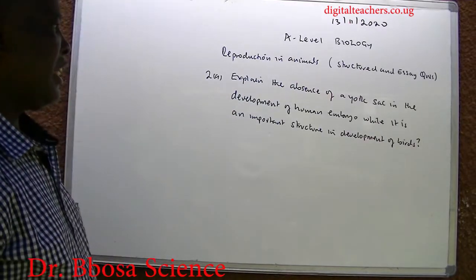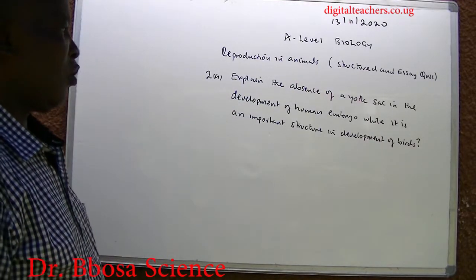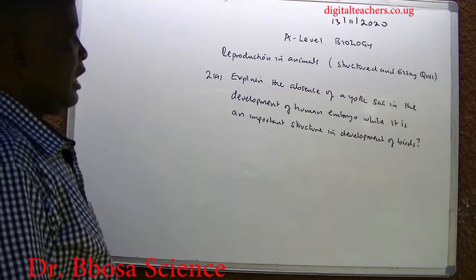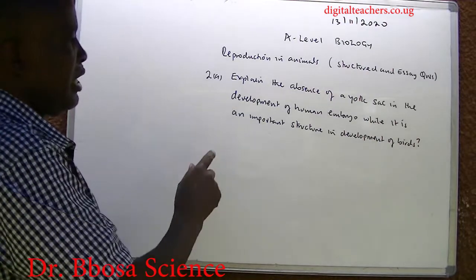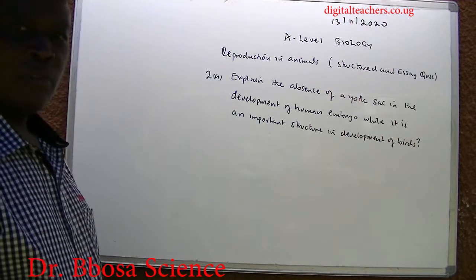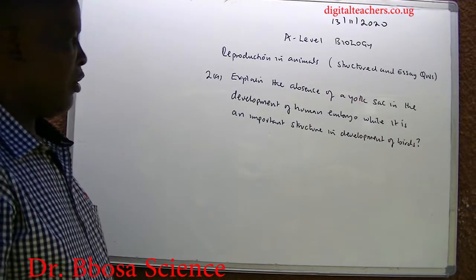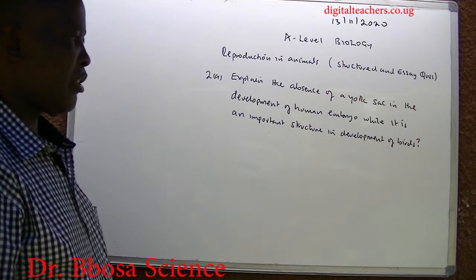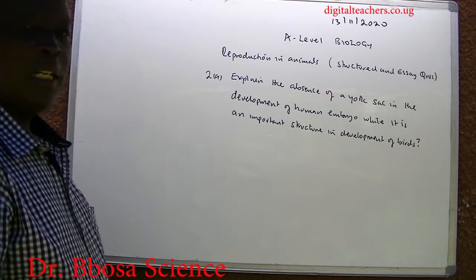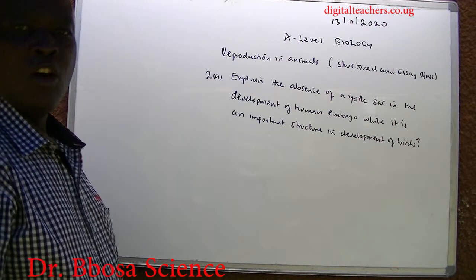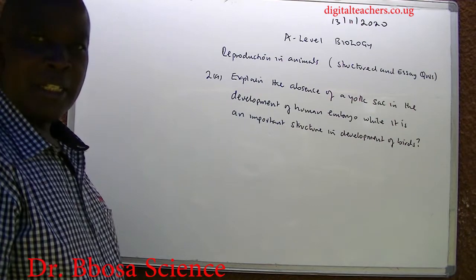Explain the absence of the yolk sac in the development of a human embryo, while it is an important structure in the development of birds.